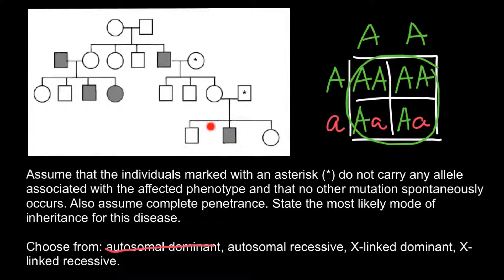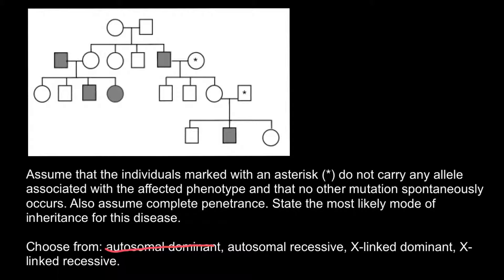But we see that one person here is affected. So we can say this is not an autosomal recessive genetic disorder and we can cross it off our list. We are now left with two variants: X-linked dominant and X-linked recessive.